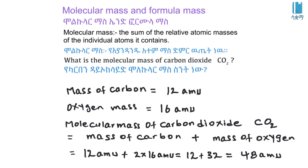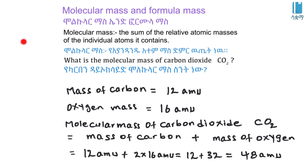Carbon dioxide contains carbon and oxygen atoms. We take the atomic masses of carbon and oxygen, and the formula gives us the molecular mass of carbon dioxide as a compound.